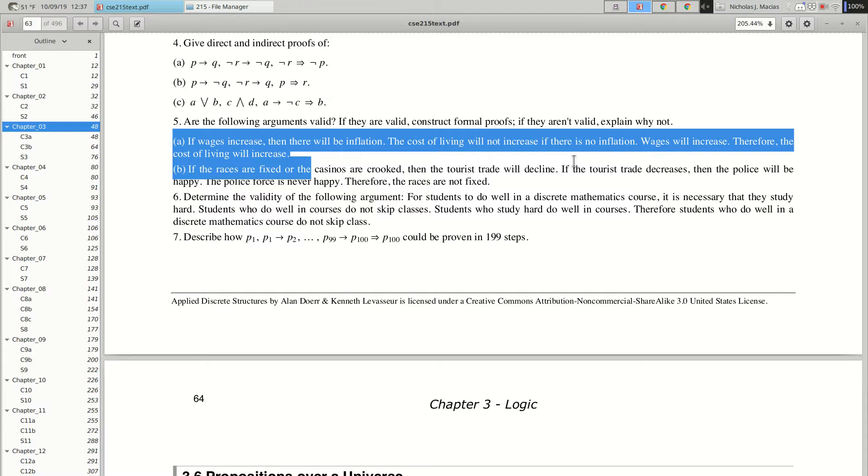So let's look at 5A, which says, if wages increase, there will be inflation. The cost of living will not increase if there is no inflation. Wages will increase, therefore the cost of living will increase. And I don't know if this is true or not, but let's write it out and see if we can prove it.